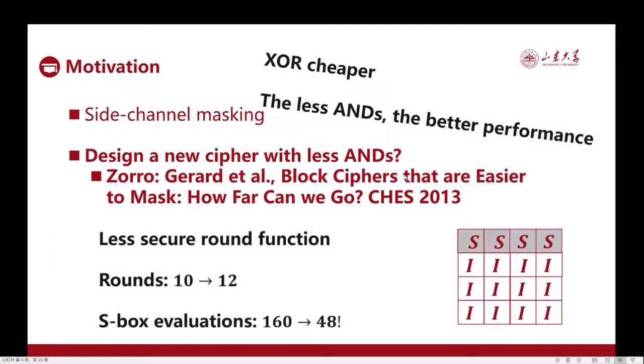This reduces the security of the round function. To compensate for this weaker round function, Zorro increases the number of rounds from 10 in AES to 12 in Zorro. So the total number of S-box evaluations in the whole encryption is reduced from 160 in AES to 48 in Zorro. And as mentioned, every S-box is lighter than AES as well, so this significantly reduces the total cost of masking.